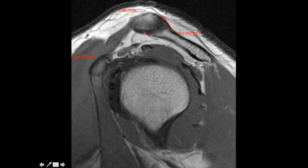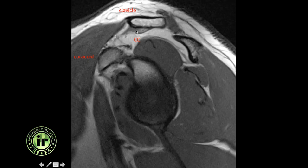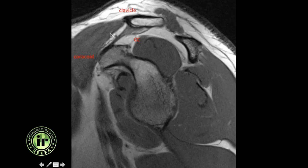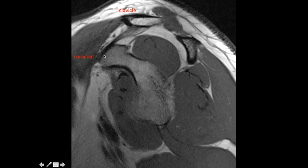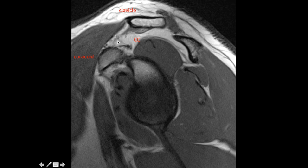Also visible is the coracoid process with the short head of biceps tendon attaching to it. Going further medially you see the coracoclavicular ligament — a ligament arising from the undersurface of the clavicle and attaching to the coracoid process. Do not confuse the coracoacromial ligament with the coracoclavicular ligament; it is the coracoclavicular ligament that is critically important for the AC joint.